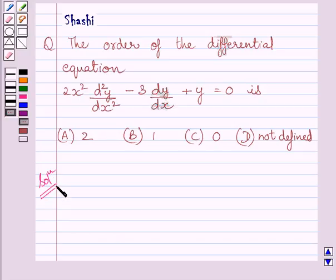First of all, let us rewrite the given differential equation. Given differential equation is 2x square d square y upon dx square minus 3 dy upon dx plus y is equal to 0.